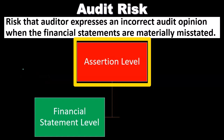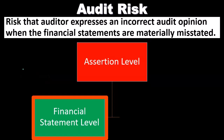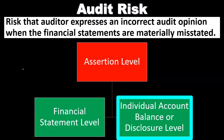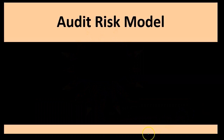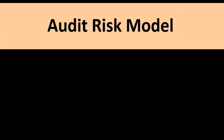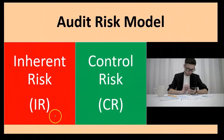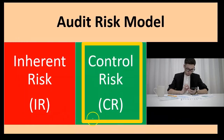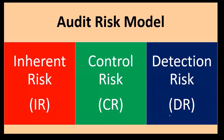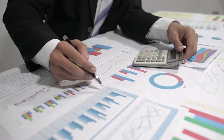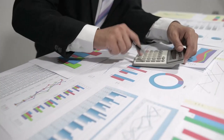We want to set audit risk — the risk of issuing a clean opinion when there is an undetected material misstatement — to an acceptably low level. We can think about this at the financial statement level as a whole, as well as at the individual account balance or disclosure level when breaking it down to a more granular level.